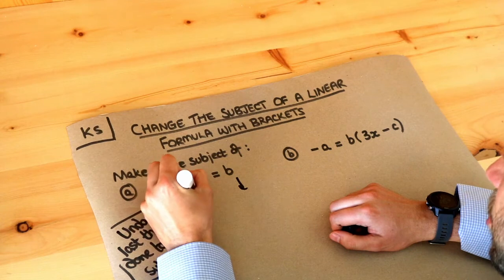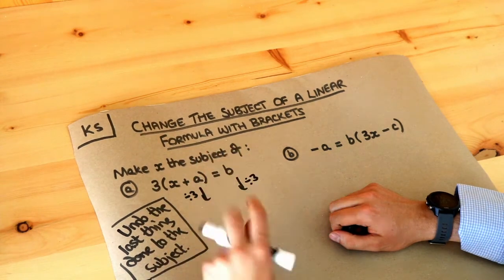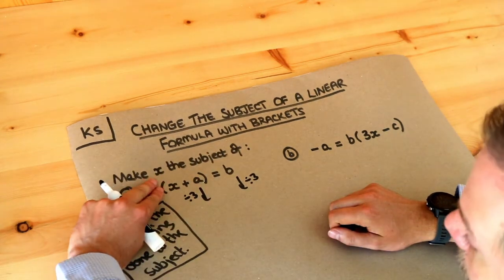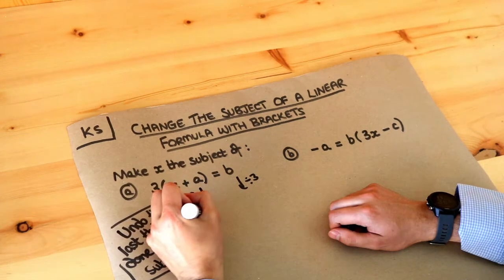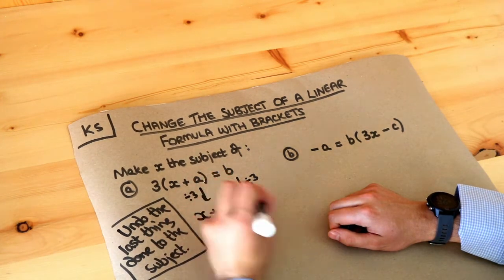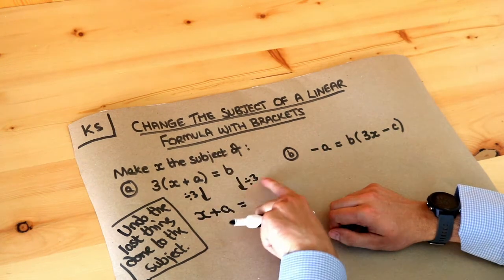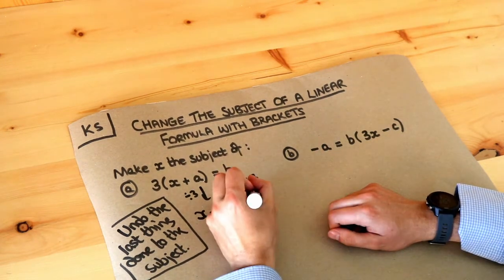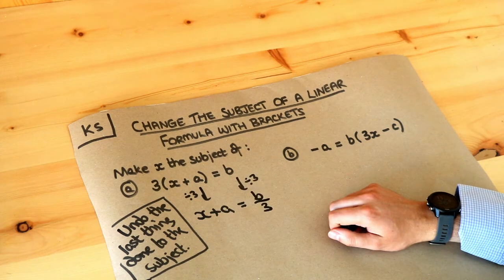There is another way of doing this which I'll show you in a second. Dividing by 3 gets rid of that times by 3, and we're just left with x plus a. Then if we divide the b by 3 — remember we don't use a divided symbol in algebra, we should write that as b over 3 as a fraction. Fractions are good in algebra; divided symbols are bad.